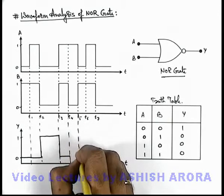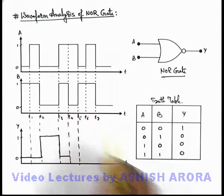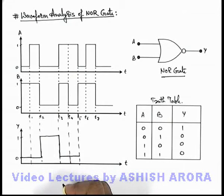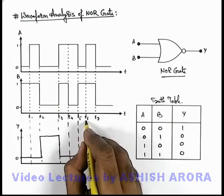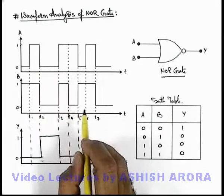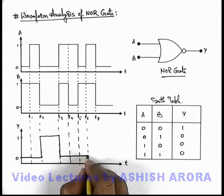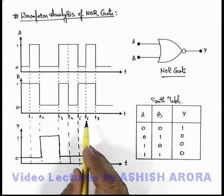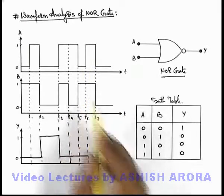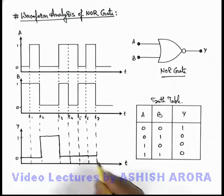From t4 to t5, the state of A is 1 and B is 0, so corresponding to input (1,0) the output is 0, and it'll continue to be zero. From t5 to t6, A is 0 and B is 1, so corresponding to (0,1) again the output is 0. From t6 to t7, both are in high state, so again the output will continue to be zero.